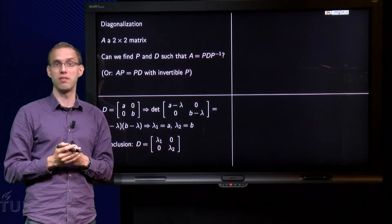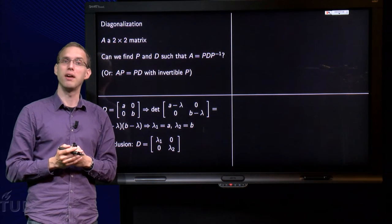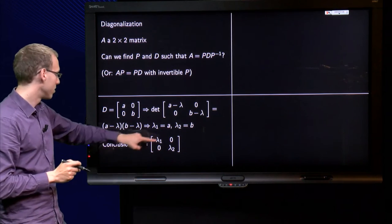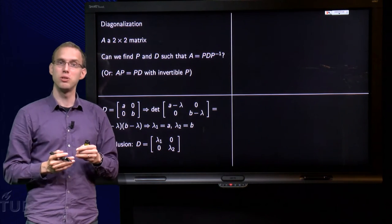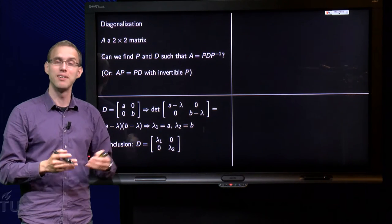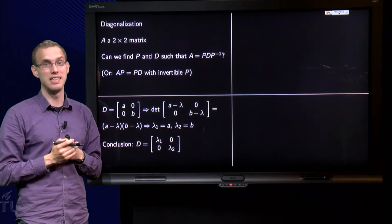I compute the eigenvalues of A, and I find my matrix D by putting those eigenvalues on the diagonal. So the D matrix should consist of the lambdas of A. That is how we find the matrix D.